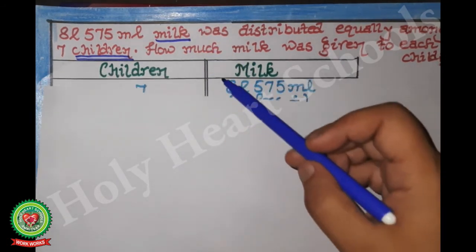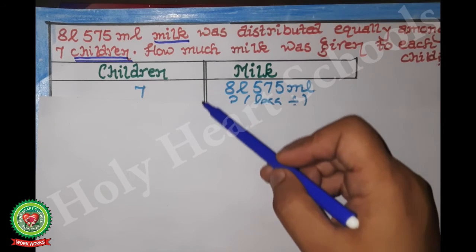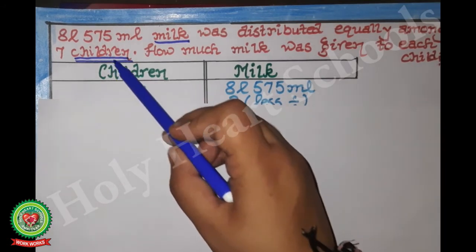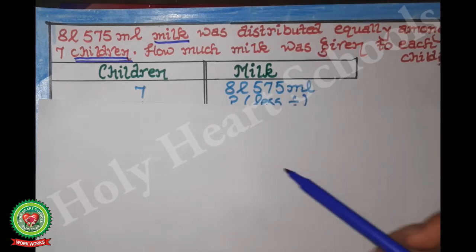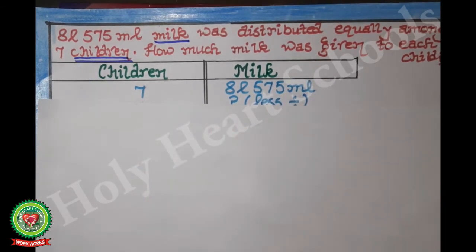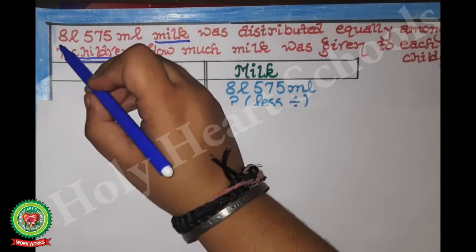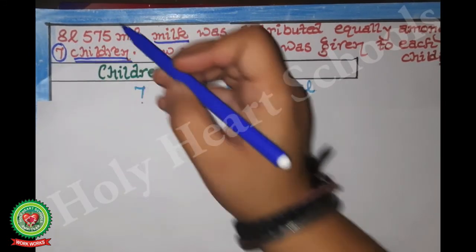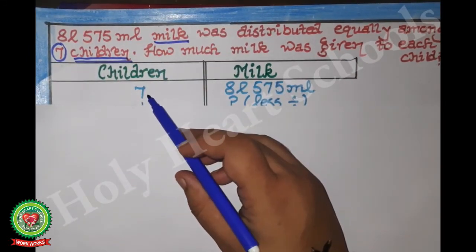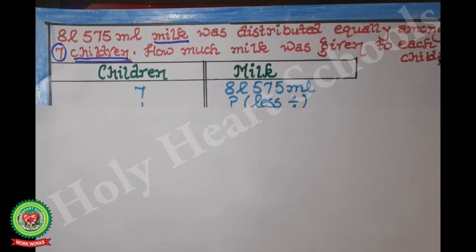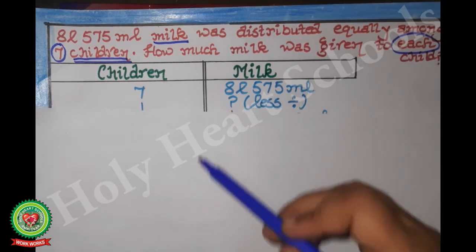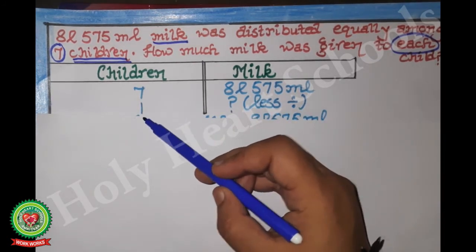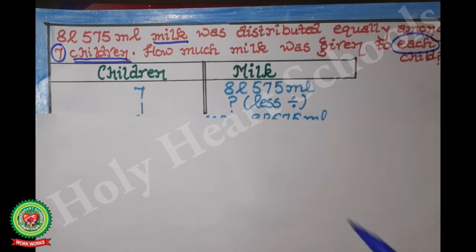We draw a partition line; left side we write children and right hand side milk. Firstly, how many children are given? Seven, so we write 7. Second time, how many children are given? 'Each' — students, each means one. And how much milk is given? 8 liters 575 milliliters.